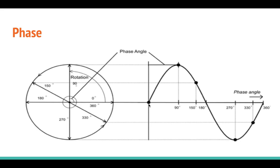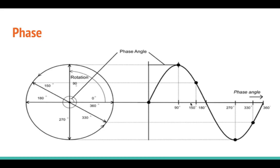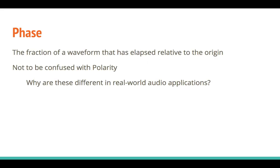A polarity flip has the negative values and then goes positive. A phase shift of 180 degrees simply moved the entire waveform to start here. So we don't want to confuse this term with polarity. And by the end of the next section of this video, you should be able to answer why a phase shift is different than polarity in real-world audio applications.